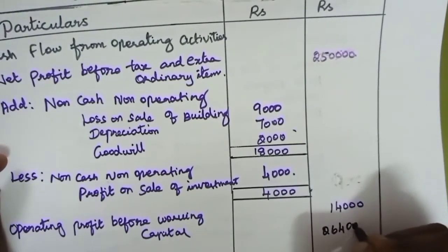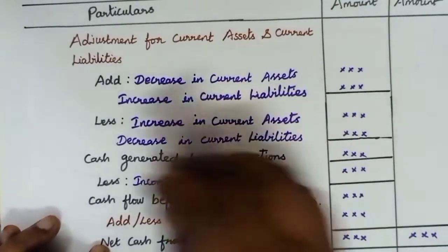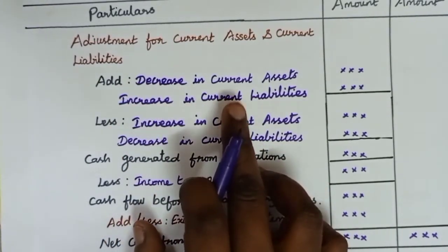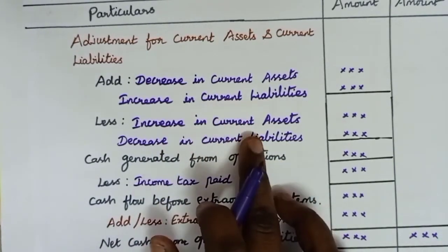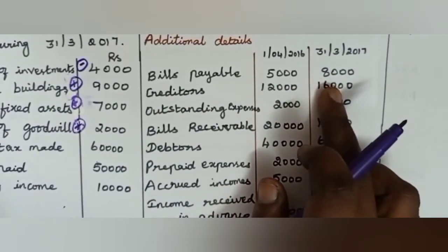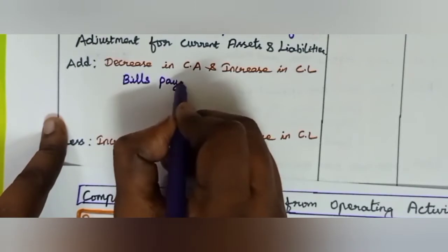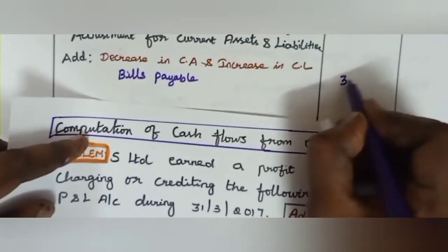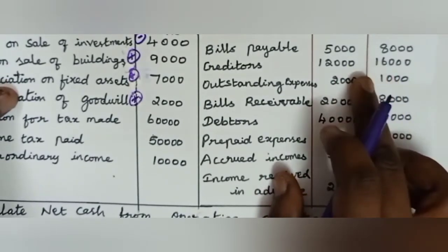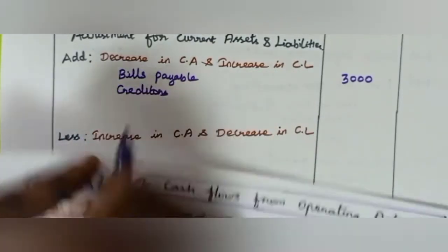After determining operating profit before working capital changes, we have to adjust for current assets and current liabilities. Any decrease in current assets and increase in current liabilities we have to add; any increase in current assets and decrease in current liabilities we have to subtract. Bills payable is a current liability — increase of 3,000, so we add it. Creditors is a current liability — increase of 4,000, so we add it.